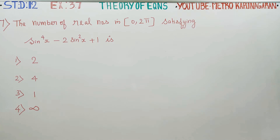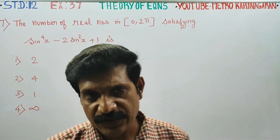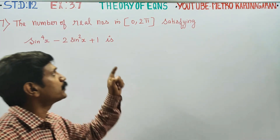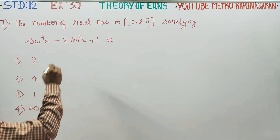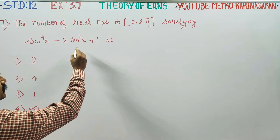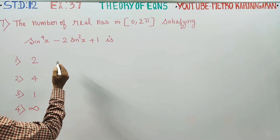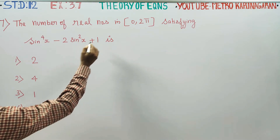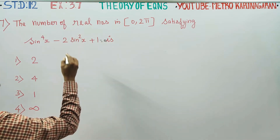Dear 12th standard students, in exercise number 3.7, problem number 7: find the number of real numbers in [0, 2π] satisfying sin⁴x - 2sin²x + 1 = 0.